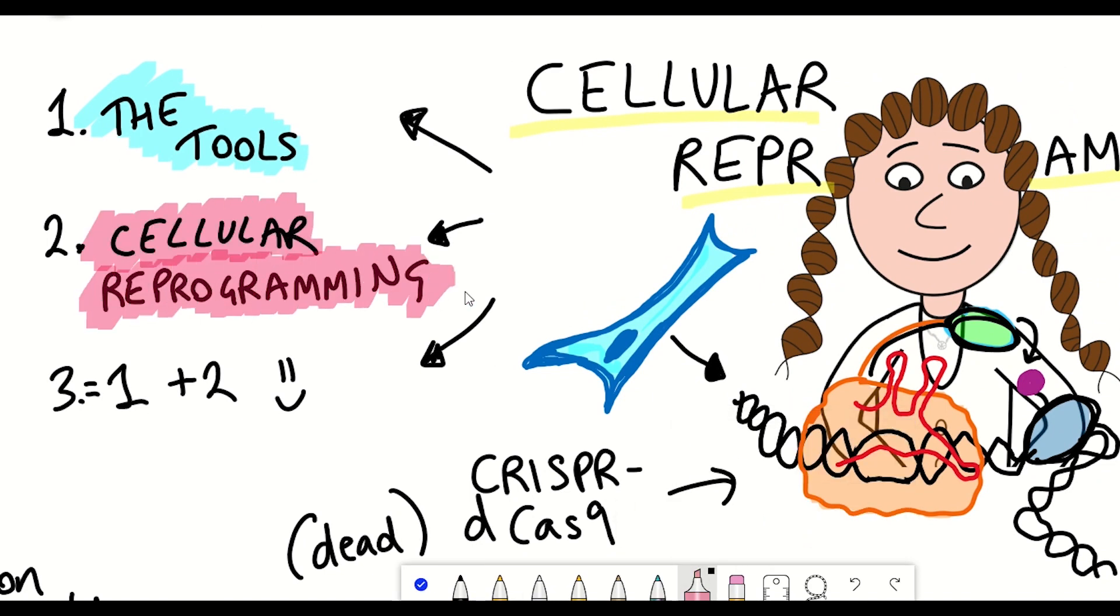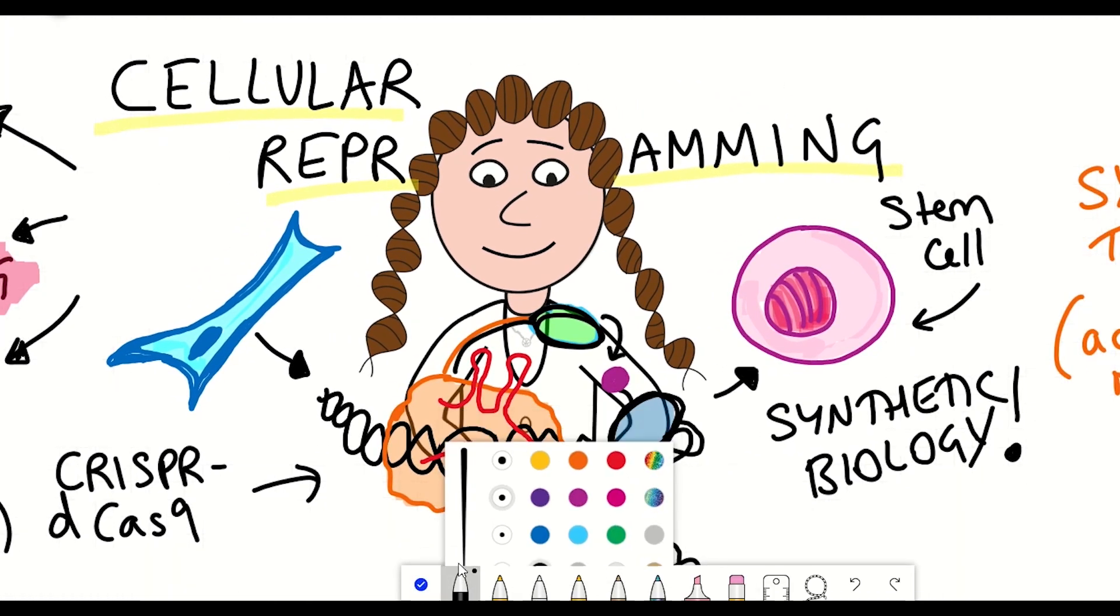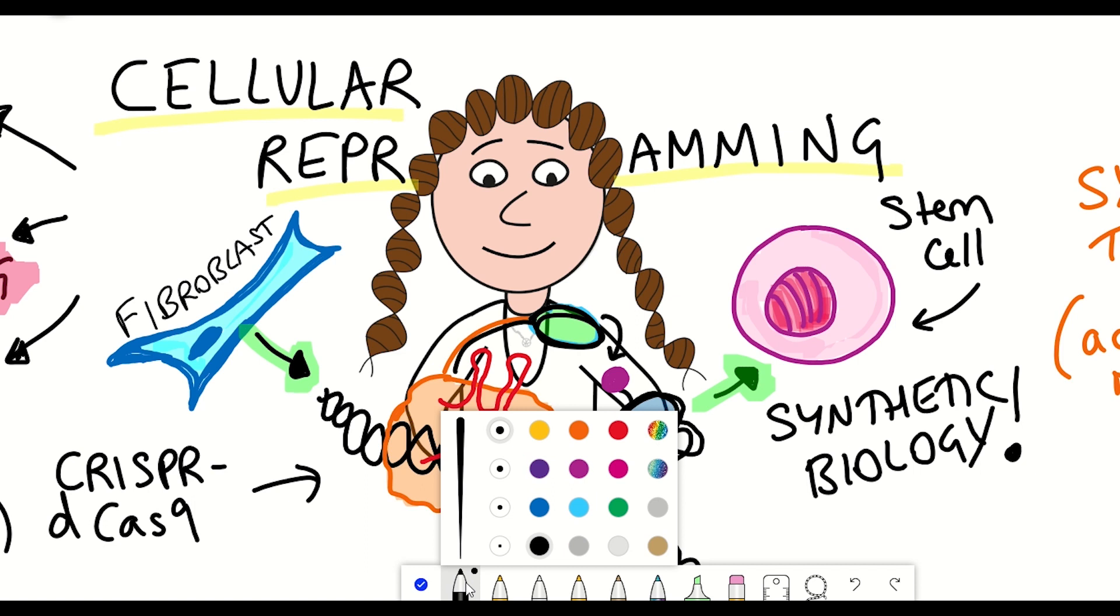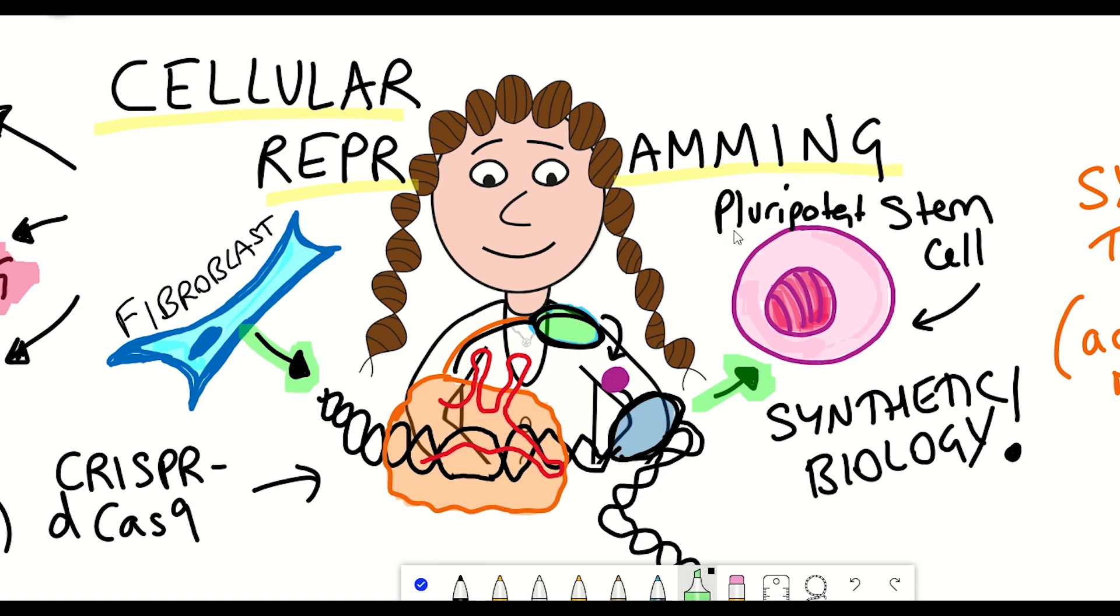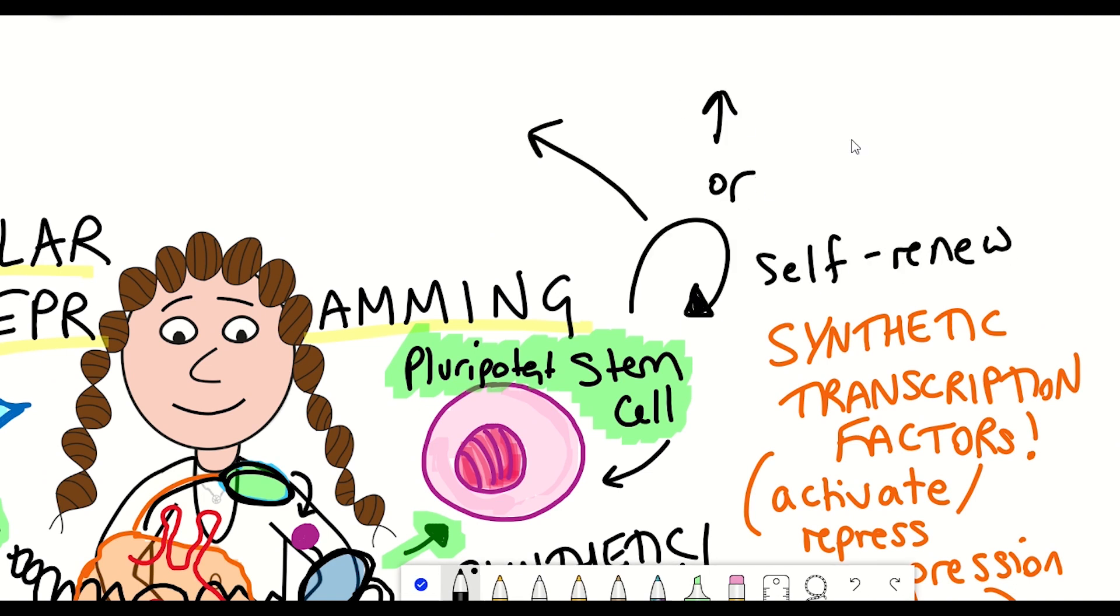And so cellular reprogramming is typically thought to define the process of converting a differentiated cell type, for example a fibroblast cell, and converting it back to so-called pluripotent stem cells. And so these are cells that then have the capability of differentiating into different types of cells.